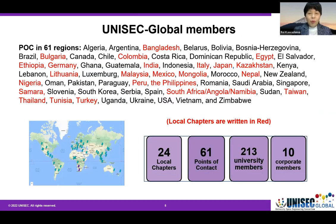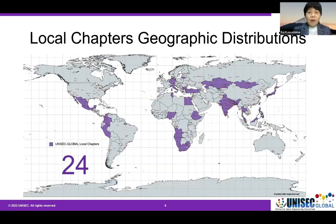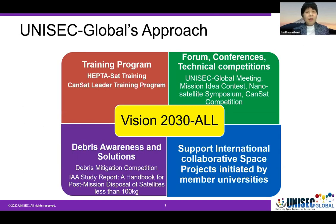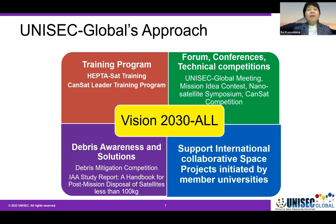Currently we have 24 local chapters and 61 points of contact. The number of university members are 213, and we have 10 corporate members. Local chapters are written in red on the geographic distribution map. We are very small and have very limited resources. How can we realize such a big vision? We believe even if we are small and do not have the resources, there must be something that we can always do.